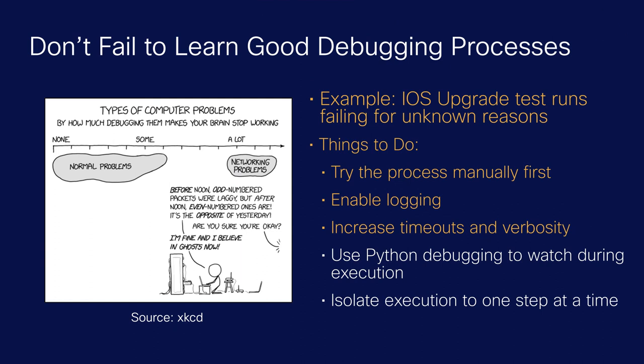Sometimes it's as simple as a syntax issue that's different from one platform to the next, or a character encoding issue — things that pop up only when you try it manually. Learning good debugging processes means enabling logging when you're working and creating your Ansible or Python scripts. Increase your timeouts and verbosity, because default timeouts can vary quite a bit in production — you might be talking to a network device across the world with high CPU, causing your scripts to fail. Capturing all of that in your logging is really important.